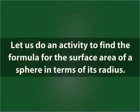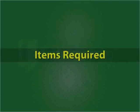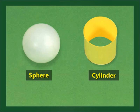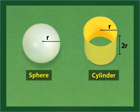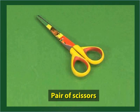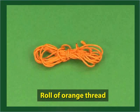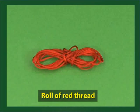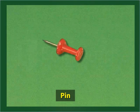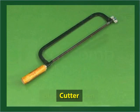We'll use this information in an activity to find the formula for the surface area of a sphere in terms of its radius. For the activity, we need a sphere and a cylinder of equal radius. The height of the cylinder should equal the diameter of the sphere. We also need a pair of scissors, a roll of orange and red thread, a pin, a cutter, and a black sketchbook.